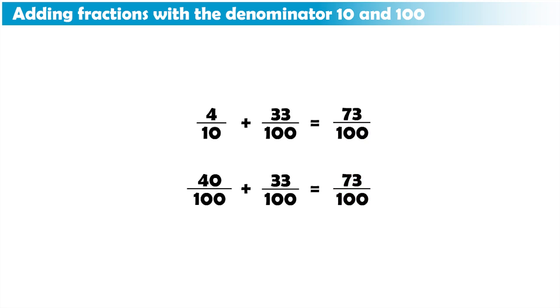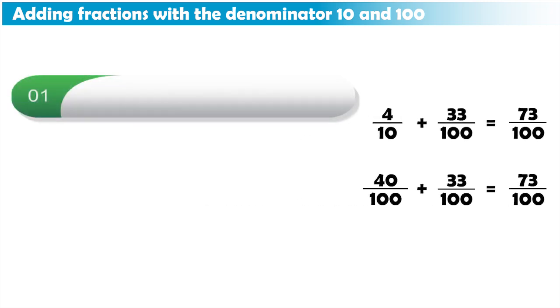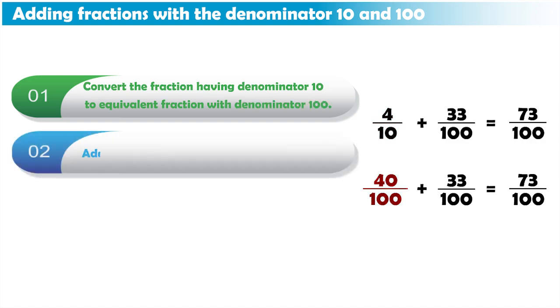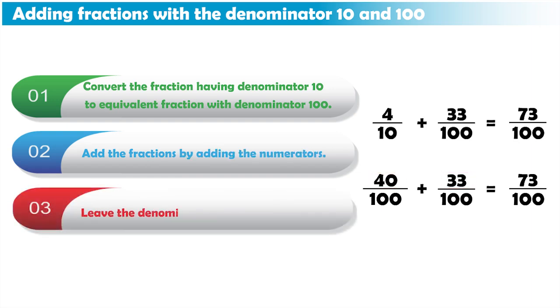In general, if we wanted to add fractions with denominator 10, and fractions with denominator 100, we first convert the fraction having denominator 10 to equivalent fractions with denominator 100. Then we add the fractions by adding the numerators, and leaving the denominator 100 unchanged.